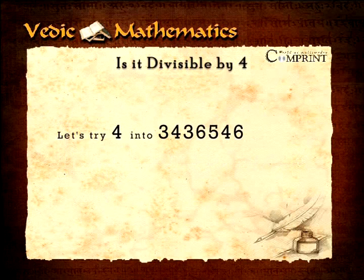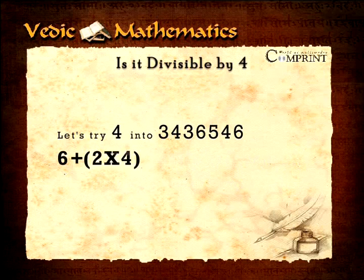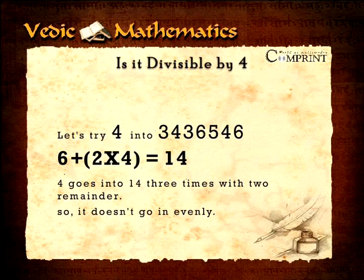Let's try four into 3,436,546. Take the last digit six and add it to two times the penultimate digit four: six plus two multiplied by four equals fourteen. Four goes into fourteen three times with a remainder of two, so it doesn't go in evenly.